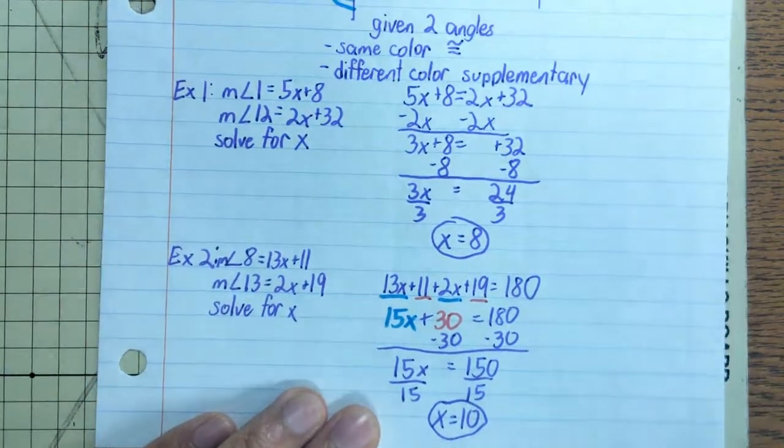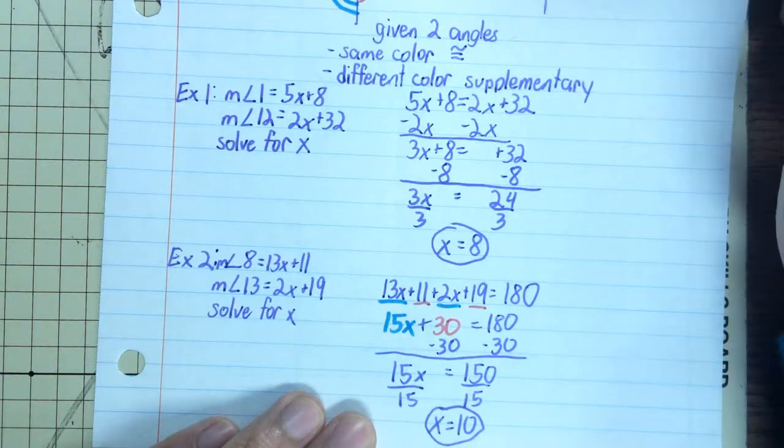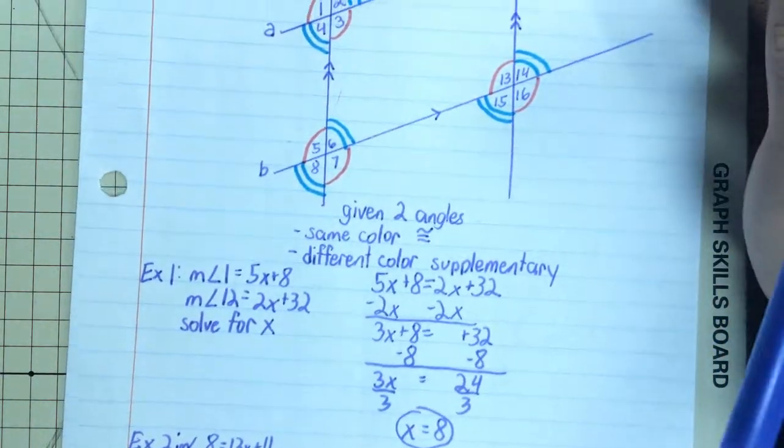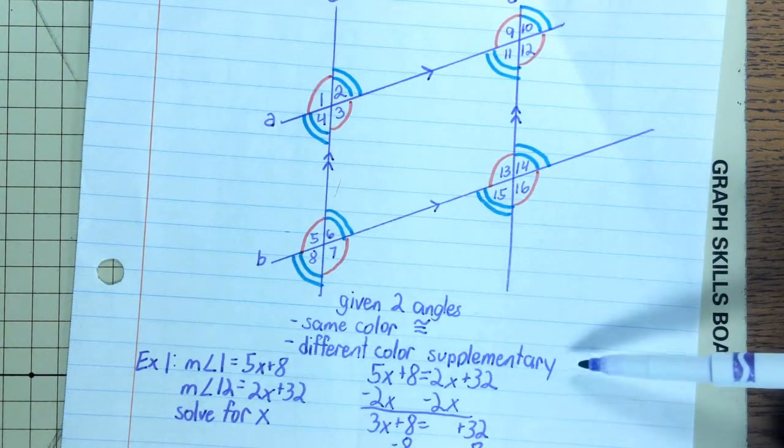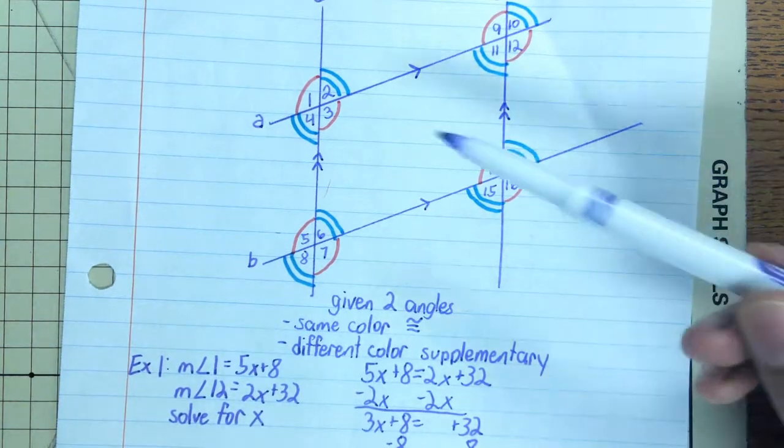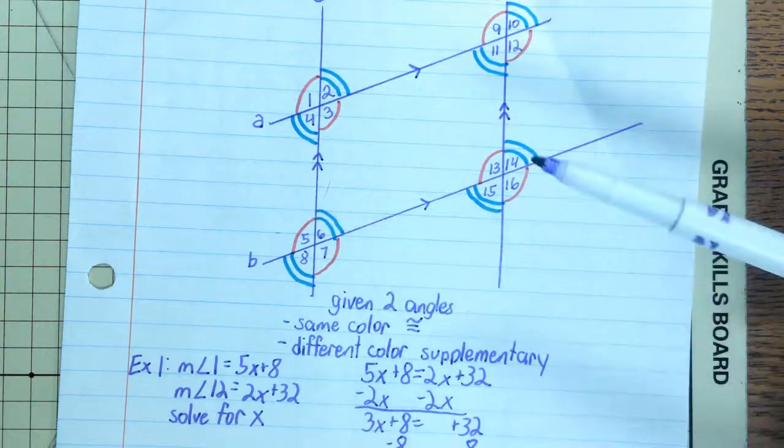So the key part with this unit is being able to identify if we are given two angles, are they congruent or are they supplementary? And we can tell them from this diagram right here.